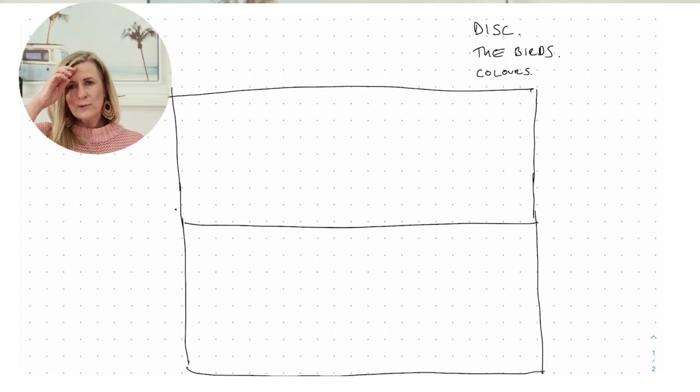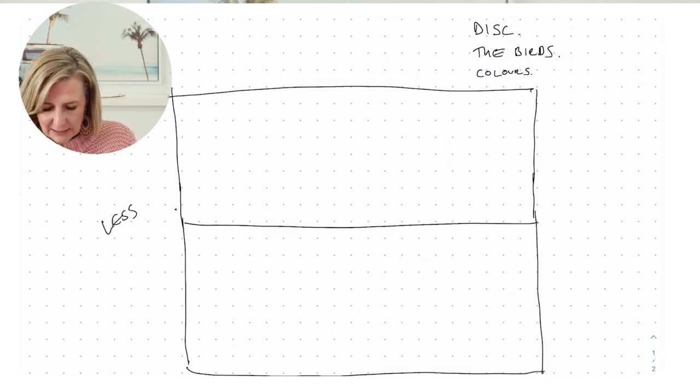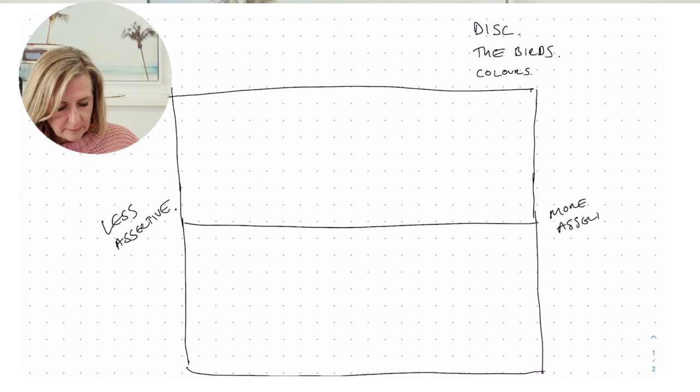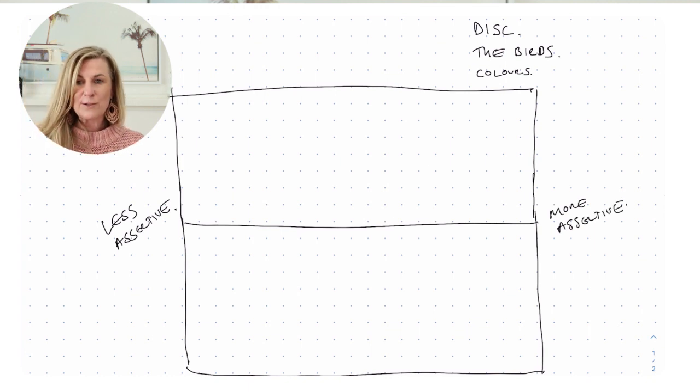So the first continuum runs horizontally. And this continuum really looks at our levels of assertiveness. So as a human, you could be either less assertive or more assertive. And you think of this as the assertive spectrum. So there are some people who will be way up here and some people that are halfway, some people are closer to the middle and some people down here. But let's talk about the differences. So a less assertive person, and this is a really important thing to understand. Number one, people are much more predictable than we think. So when we understand their behaviours, we can actually predict how they might show up rather than judge them for being wrong.